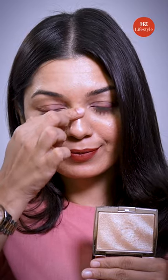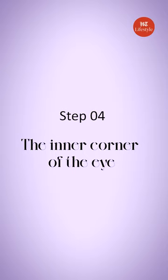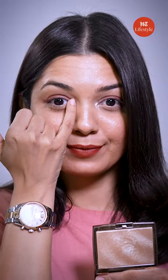Bridge of the nose — I will apply the highlighter along the bridge of my nose. For the inner corner of the eye, I will just use a small pinch like this on my pinky finger and add it to the inner corner of my eye.